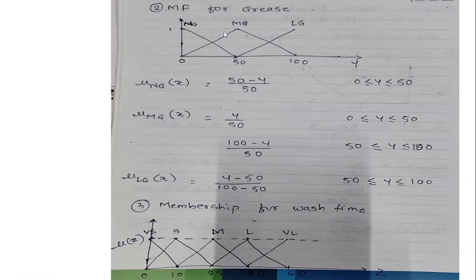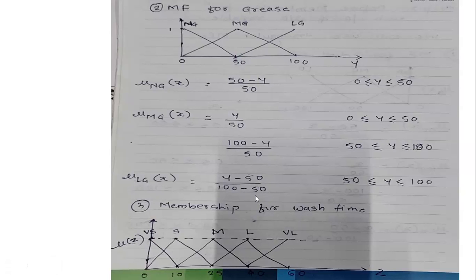For grease, we again have the same three descriptors: no grease, medium grease, and large grease, with similar ranges to the dirt variable. For no grease (0 to 50): (50 − y) / 50. For medium grease (0 to 100): y / 50 for the rising part and (100 − y) / 50 for the falling part, where y is the variable notation for grease. For large grease (50 to 100): (y − 50) / 50.